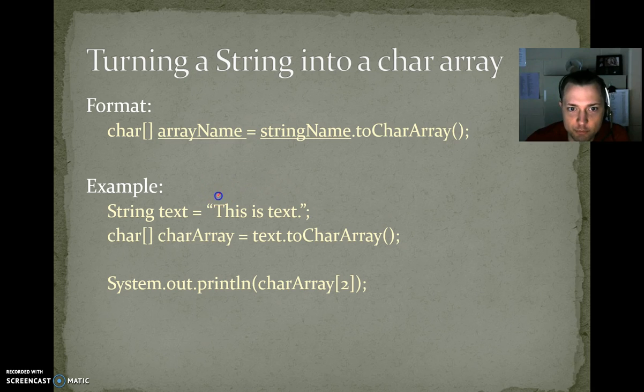The capital T will be at location 0, the H at location 1, the I at location 2, the S at location 3. There's a little space right there, it's going to be at position 4, I at 5, S at 6, the next space is at position 7, T at 8, E at 9, the X is at position 10, the T is at position 11, and the dot is at position 12.